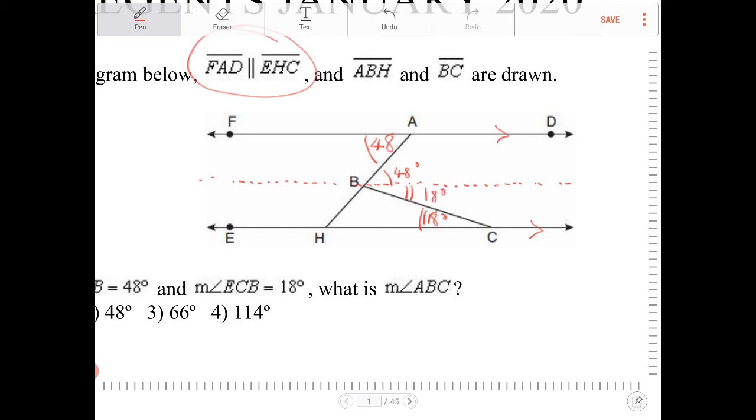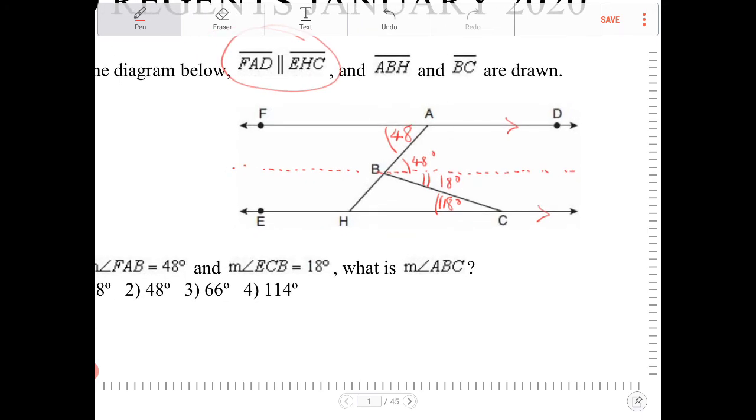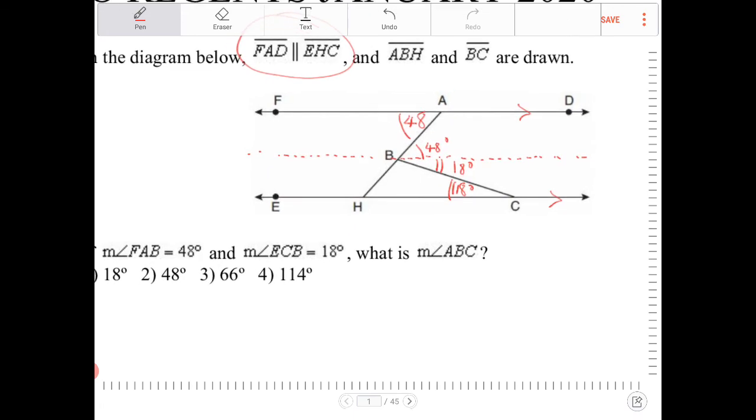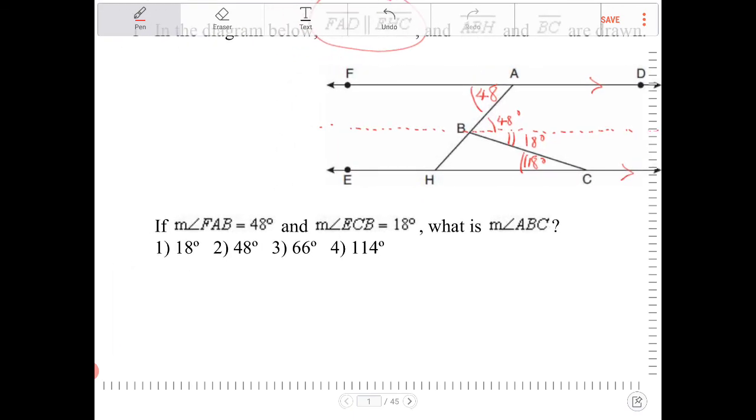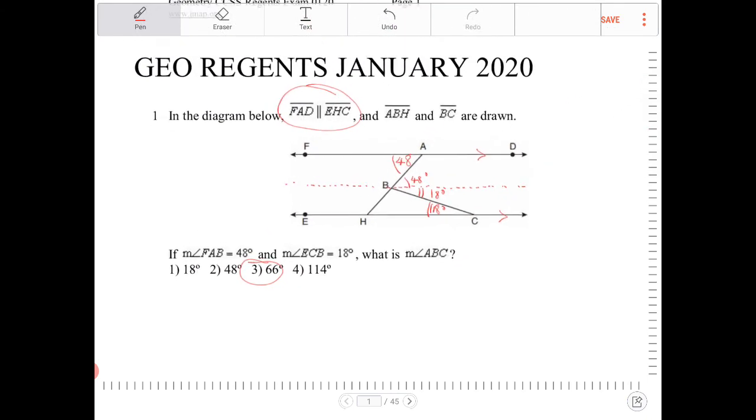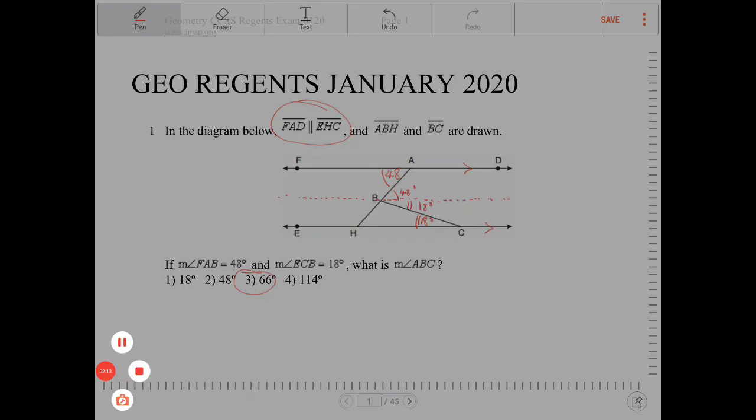And 18 degrees is going to be the alternate interior angle to that angle there, so this angle is also going to be 18 degrees. So angle ABC, as a result, is going to be the sum of 48 and 18, and that would be 66. So that's the trick.